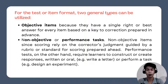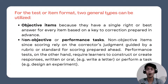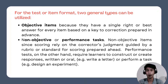For the test or item format, there are two general types that can be utilized: objective test items, or non-objective or performance tasks. Objective items have a singular right or best answer for every item, based on a key correction prepared in advance. On the other hand, non-objective items rely on the corrector's judgment guided by a rubric or standard for scoring prepared ahead. Performance tests require learners to construct or create a response — writing or oral — like, for example, write a letter, or performance tasks like design an experiment.